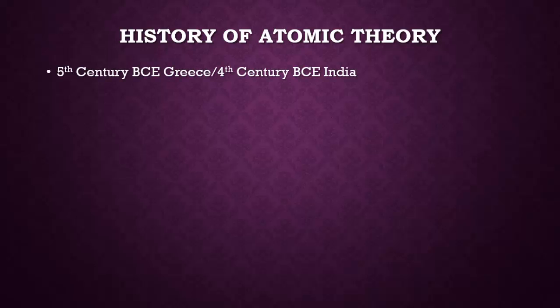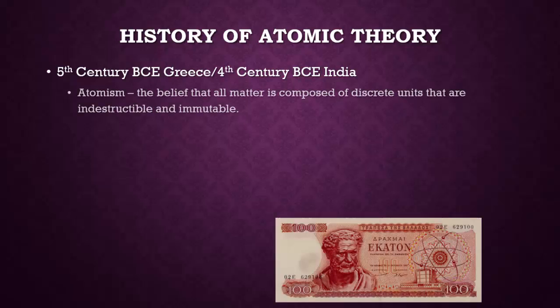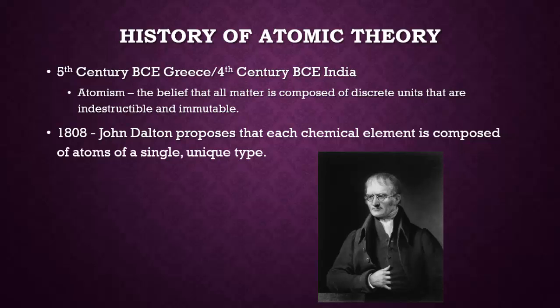Atomic theory originates in ancient Greece and India. Atomism is the belief that all matter is composed of discrete units that are indestructible and immutable. At the time, this is more of a philosophical idea and not a scientific principle. There isn't much advancement in atomic theory for over 2,000 years.